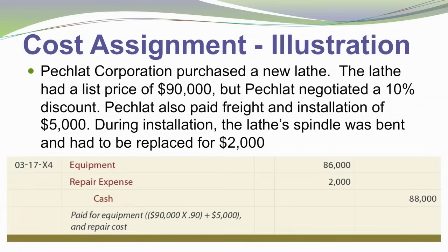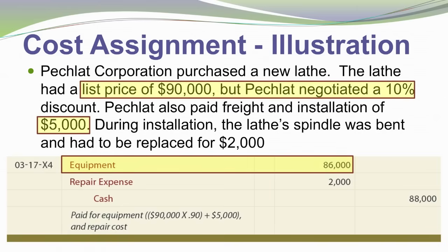Here's an example. Pecklot Corporation purchased a new lathe with a list price of $90,000. Pecklot managed to negotiate a 10% discount on the purchase, and also paid freight and installation costs of $5,000. The $90,000 is the list price, not the actual price. Backing out the 10% discount gives us an $81,000 purchase price, plus $5,000 of installation cost, for a total equipment cost of $86,000.